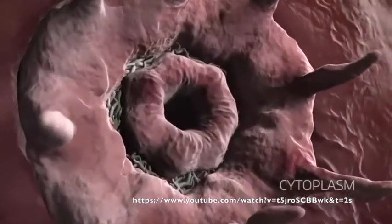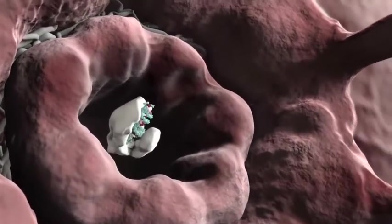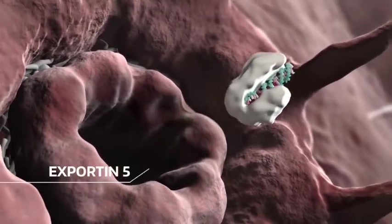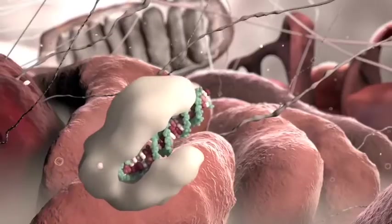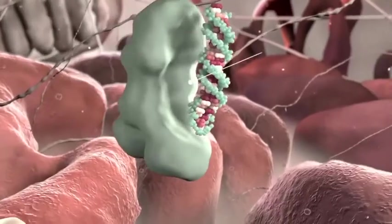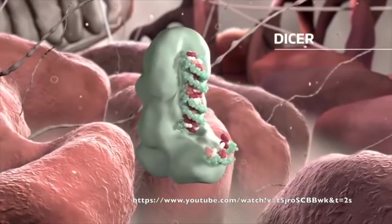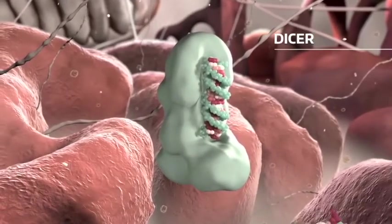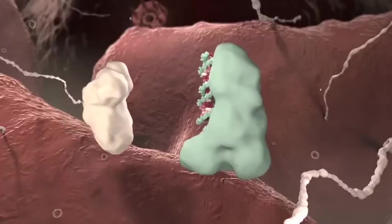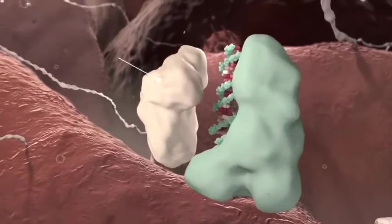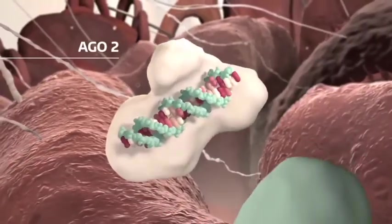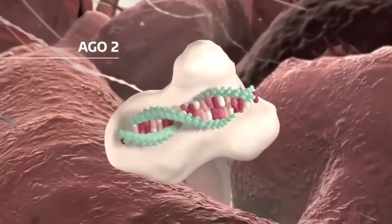MicroRNA is an essential component of cell function and regulation. Once transcribed, microRNA undergoes a series of nuclear processing and is exported into the cytoplasm by exportin 5 via a nuclear pore. In the cytoplasm, it is shortened by the enzyme Dicer, followed by its association with Ago2, causing the double-stranded RNA to unwind and release one of the strands.